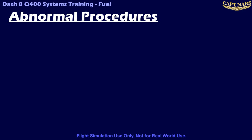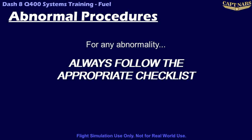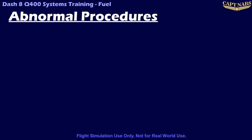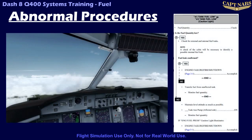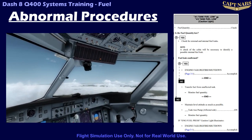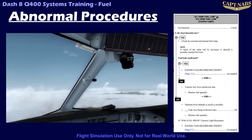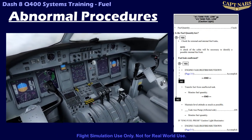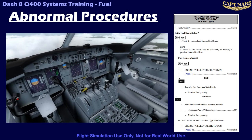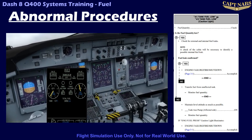There are only a few abnormalities associated with the fuel system on the Q400. As always, follow the appropriate checklist. If either the number 1 or number 2 tank fuel low caution light comes on, this indicates the related collector bay contains less than 305 pounds of fuel. If this occurs during engine start on the ground, it may be initially disregarded. Once the engine-driven pump begins turning and supplying motive flow back to the scavenge ejectors, the collector bay will be filled quickly. Should the caution light come on during flight, the checklist will consider the possibility of a fuel leak, which will lead to an engine shutdown to reduce the fire hazard.